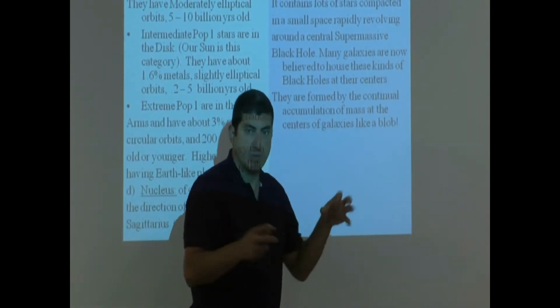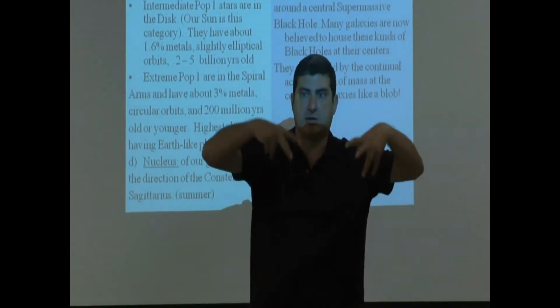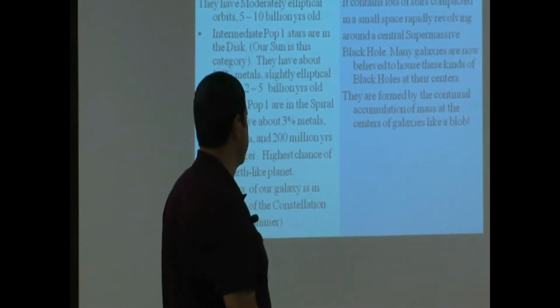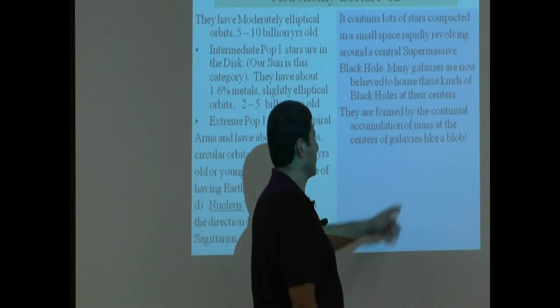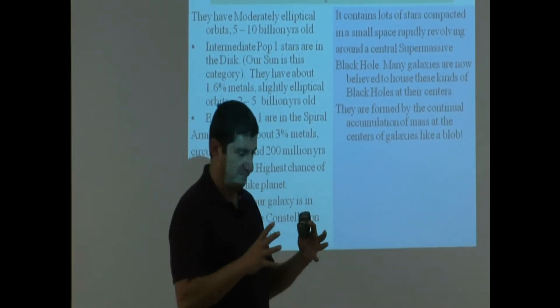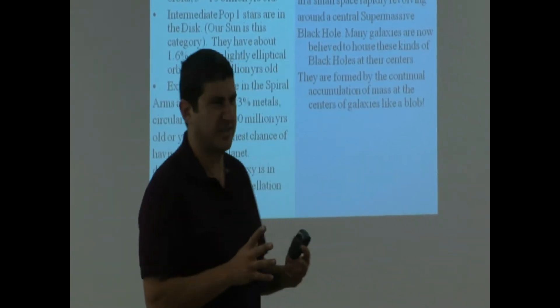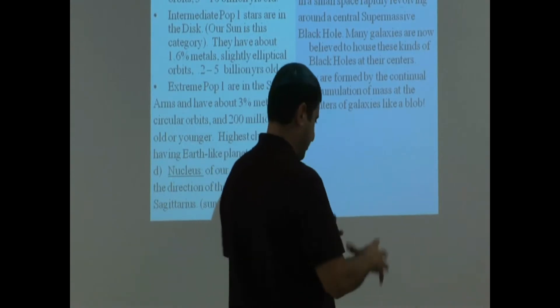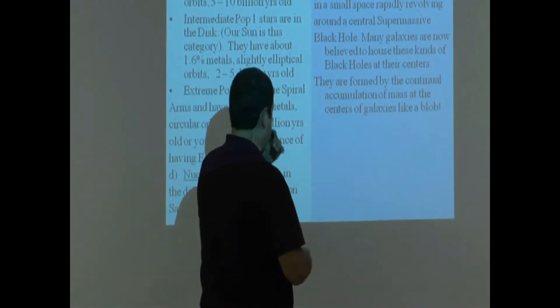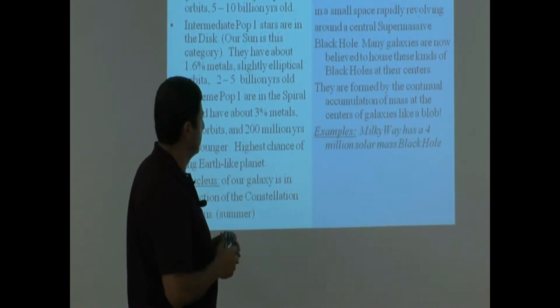They are formed by the continual accumulation of mass at the centers of galaxies. When a bunch of stars die, and then more and more die, and then it starts collapsing, the black hole starts growing larger, like a blob. It reminds me of that scary movie that I watched when I was young. This blob came from outer space. Kind of a low-budget movie, but it was eating people up and growing as it kept eating, a sci-fi thriller.